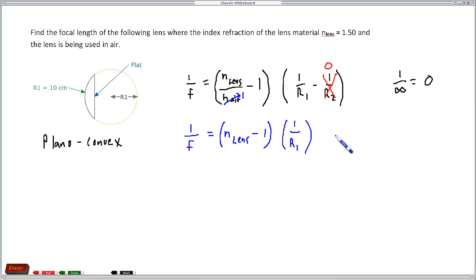So let's plug some numbers in here. n_lens minus 1. We said that the index of refraction for the lens is 1.5, so 1.5 minus 1 times 1 over a radius of curvature of 10 centimeters. This is going to give us 1 over our focal length, not our focal length. So let's simplify down. This just gives us 1 over the focal length equals 0.5 times 0.1, which equals 0.05, and that's going to give us 1 over the focal length.